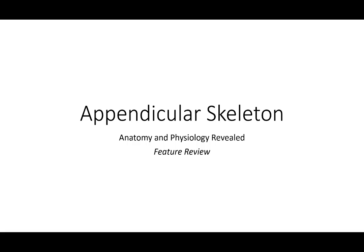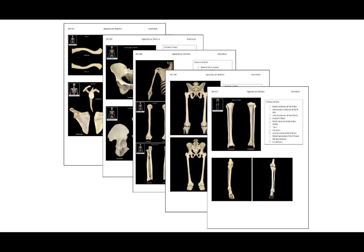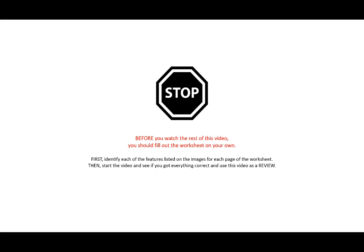The appendicular skeleton images come in five different pages on the worksheets for this chapter. Before moving on, make sure that you have gone through each of the pages on your own and tried to identify each and every one of the features listed before proceeding with this video.